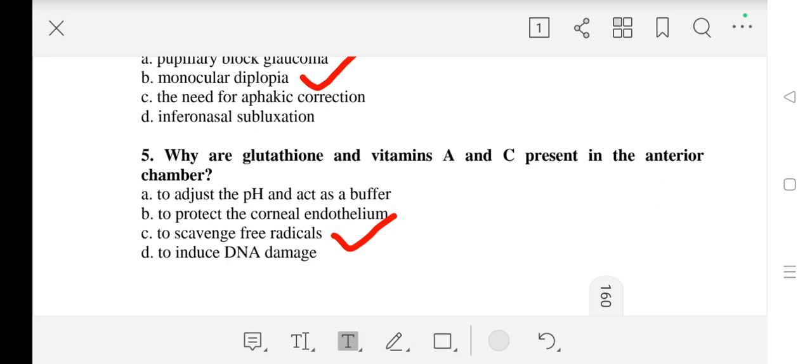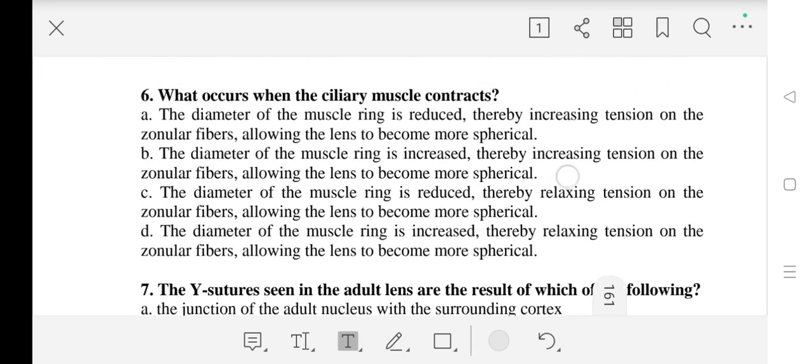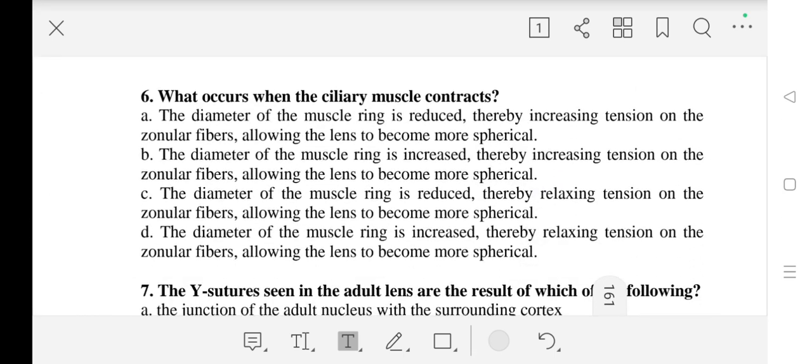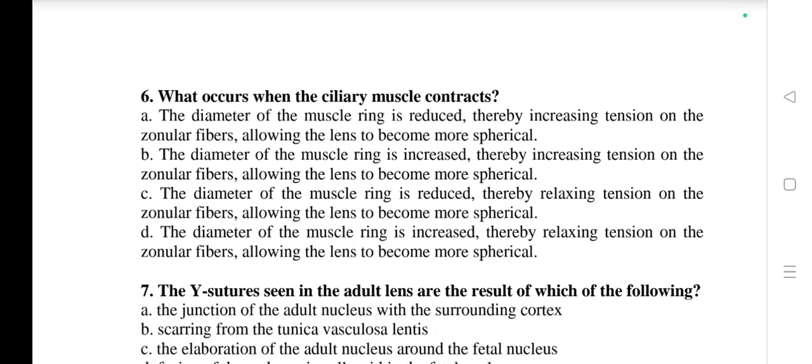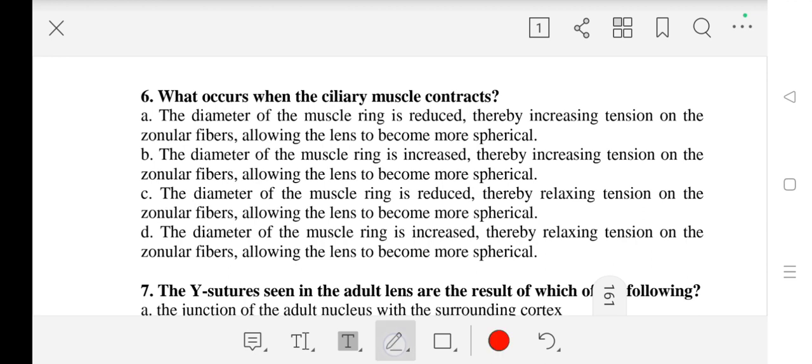Question number 6: What occurs when ciliary muscle contracts? The right answer is C - the diameter of the muscle's ring is reduced, thereby relaxing tension on the zonular fibers, allowing the lens to become more spherical.